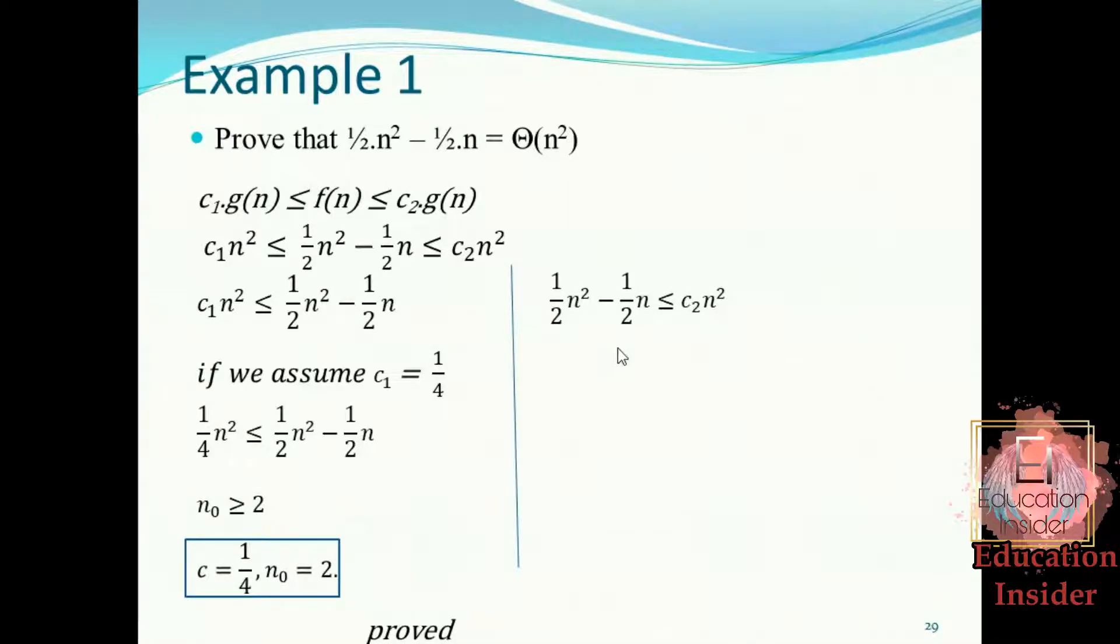Now here you can see that we have to prove that this side must be smaller than this side. So if we notice this side, that something is subtracting from ½n², which makes this side smaller.